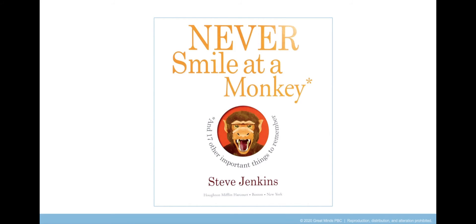Take a look at the title page of Never Smile at a Monkey. What do you notice about the text features on this page? Point gently to text features you notice. I wonder, did you point to the symbol that kind of looks like a star? I'm sure you probably did. The star-like symbol is called an asterisk. An asterisk is a symbol that tells readers to look for a note on another part of the page. The asterisk here tells readers to read more information here, and 17 other important things to remember.